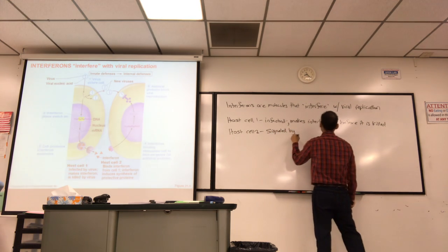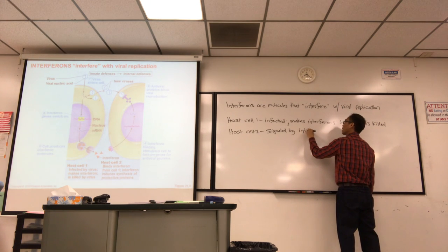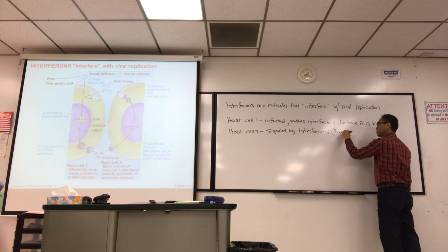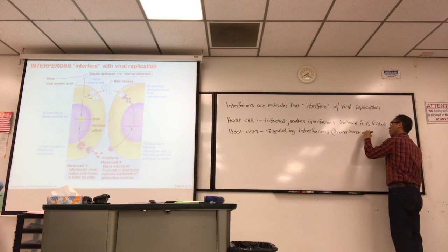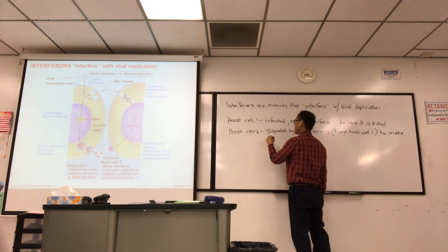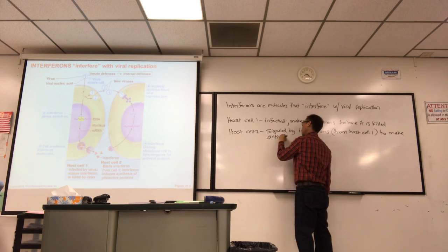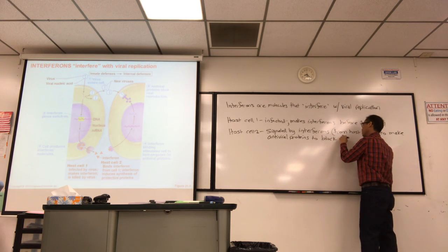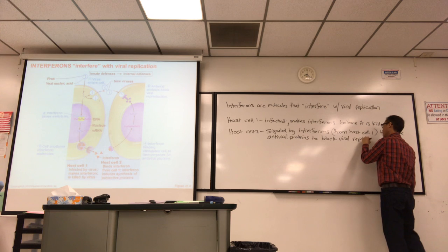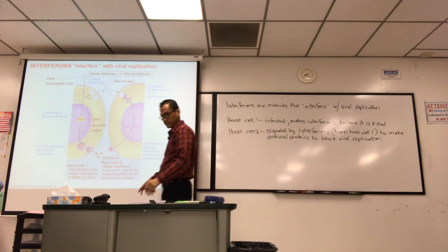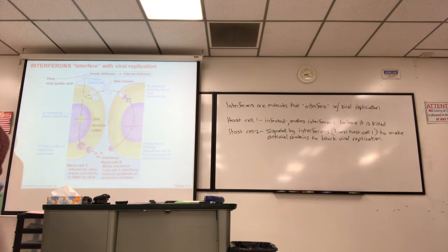But those interferons, what they do is they signal host cell 2. So it makes interferons before it is killed. Host cell 2, the interferons signal it to produce antiviral proteins to block the viral replication or reproduction. To make antiviral proteins from host cell 1 to block viral replication.